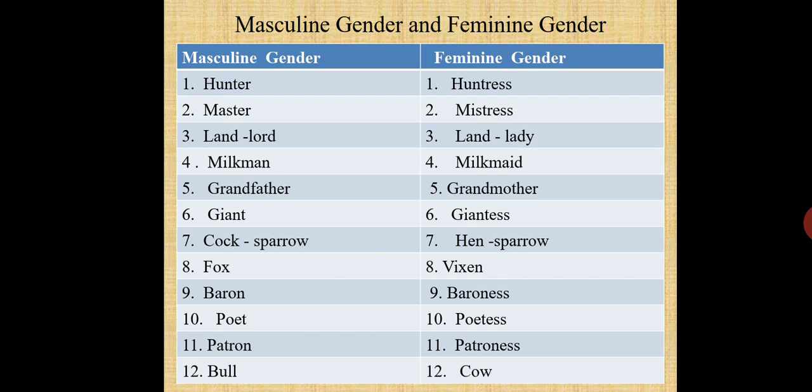Now see more examples of masculine and feminine gender. Masculine: hunter — Feminine: huntress. Similarly, master — mistress, landlord — landlady, milkman — milkmaid, grandfather — grandmother, giant — giantess, cock sparrow — hen sparrow, fox — vixen, baron — baroness, poet — poetess, patron — patroness, bull — cow.